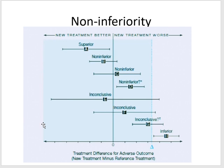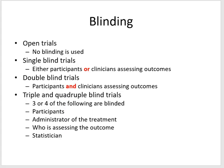For non-inferiority trials, you're only interested in showing the treatment is not inferior, so you look at one side of the distribution. As long as your results fall within the blue area and not in the inferior region, you can claim non-inferiority.